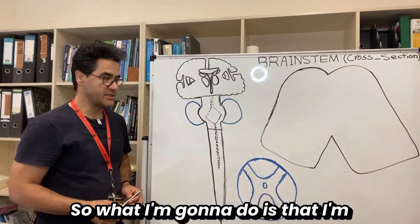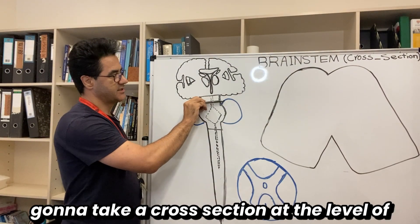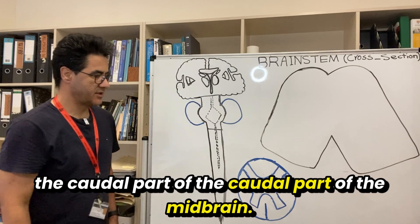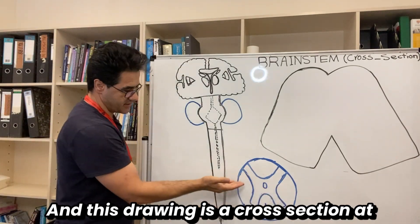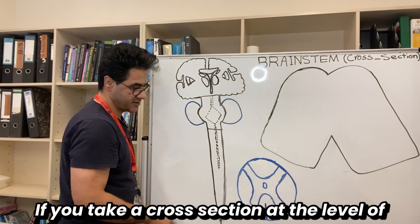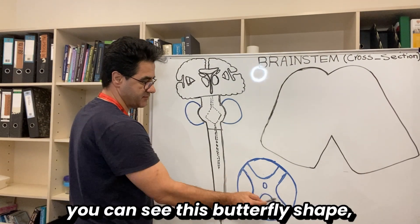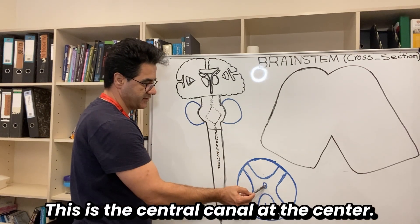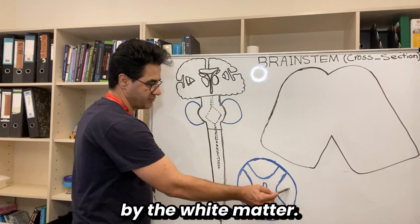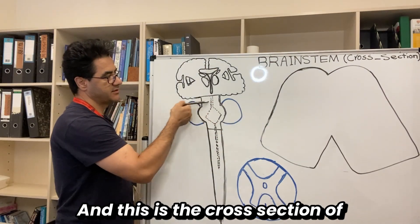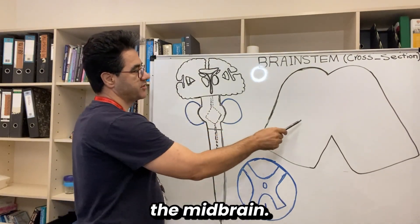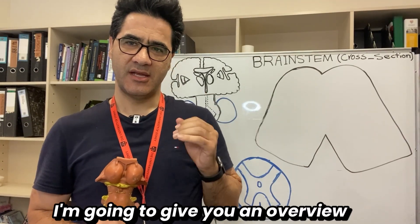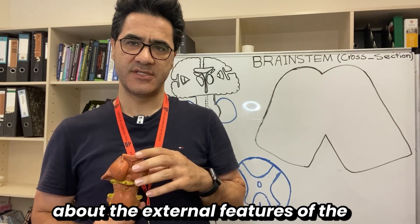I'm going to take a cross-section at the level of the caudal part of the midbrain. This drawing shows a cross-section at the level of the spinal cord — if you take a cross-section there, you can see the butterfly-shaped gray matter, the central canal at the center, and the gray matter surrounded by white matter. This other drawing is the cross-section of the midbrain. Before examining it, I'm going to give you an overview of the external features of the midbrain on this model.